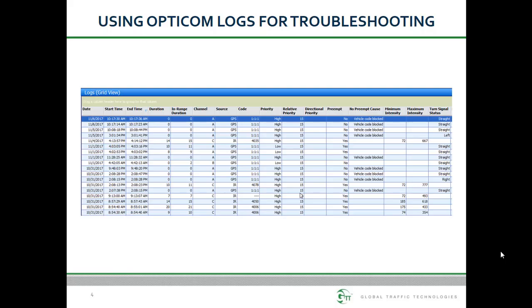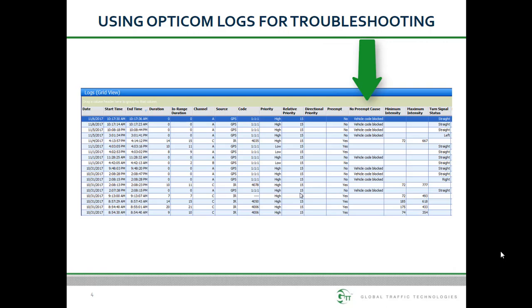First, let's start with troubleshooting examples. OptiCom logs are a great tool to bridge the communications between vehicle owning agencies and intersection owning agencies. Many times the vehicle agency contacts the intersection agency with a vague question like "why is my OptiCom not working?" Once basic troubleshooting questions have been asked to narrow down whether there is one particularly troublesome vehicle or intersection, the OptiCom logs can be used to verify details such as direction, channel call duration, vehicle ID, whether a preempt output was generated, and if not, the no preempt cause.